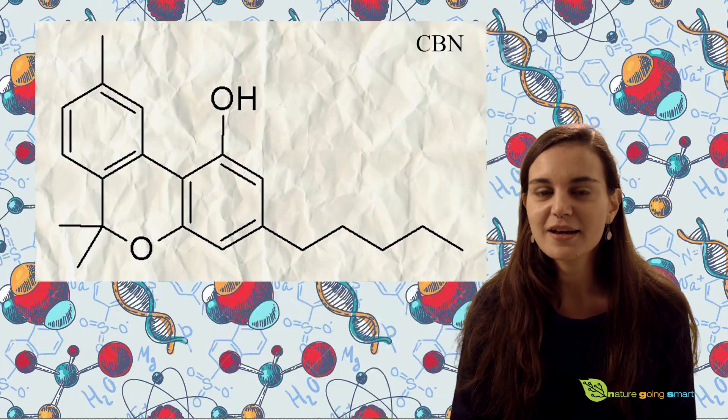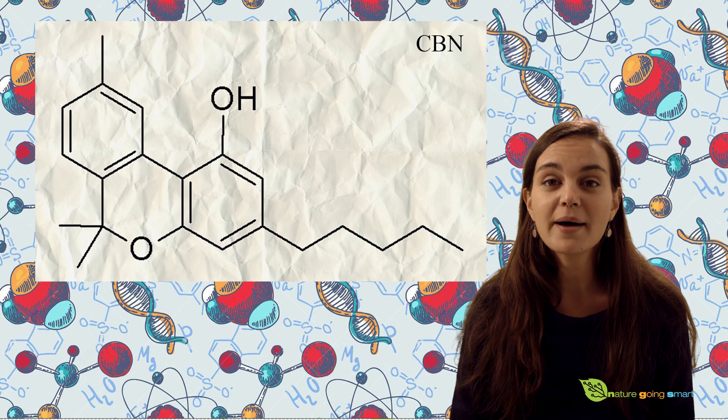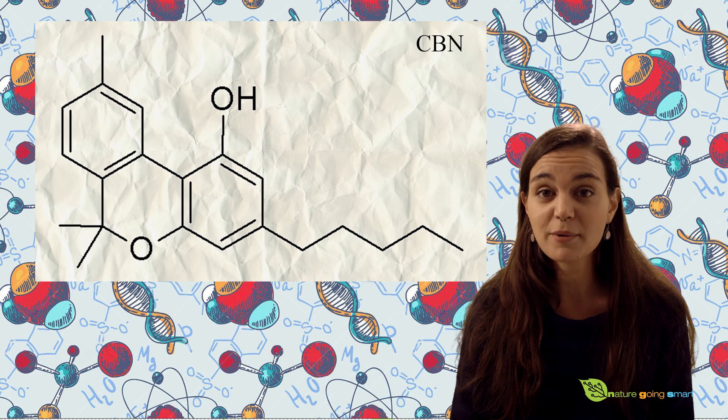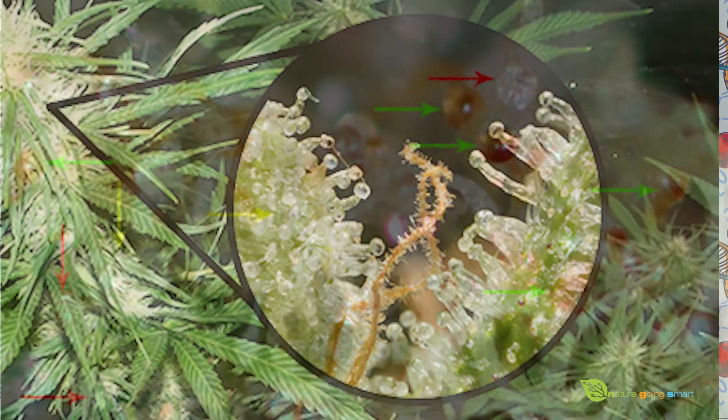From the cannabis plant, 85 different cannabinoids have been isolated. However, not all of them are present at high concentration in each strain. CBN is one of the most prevalent and best cited cannabinoids, along with THC and CBD, in the cannabis plant.